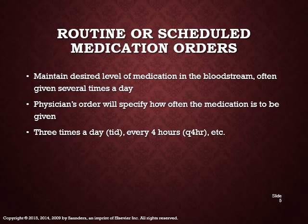Policies designate the time of day corresponding to the frequency ordered by the physician. Routine or scheduled medication orders: we want to maintain a desired level of medication in the bloodstream, often given several times a day. The physician's order will specify how often the medication is to be given. Three times a day is TID, every four hours is Q4 hour, twice a day is BID, once daily is QD, and then you'll see Q4 hour, Q6 hour, Q8 hour, Q12 hour.